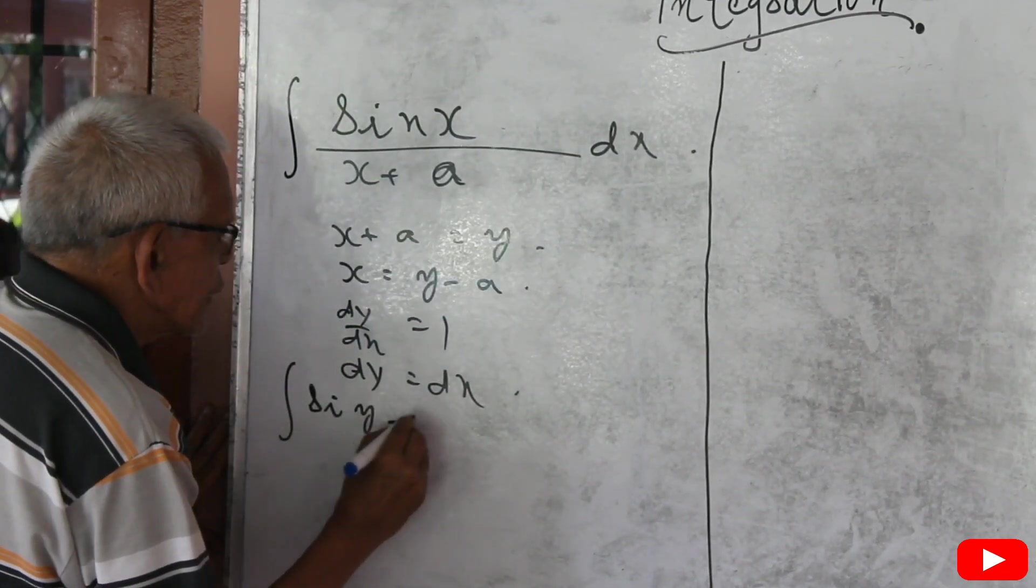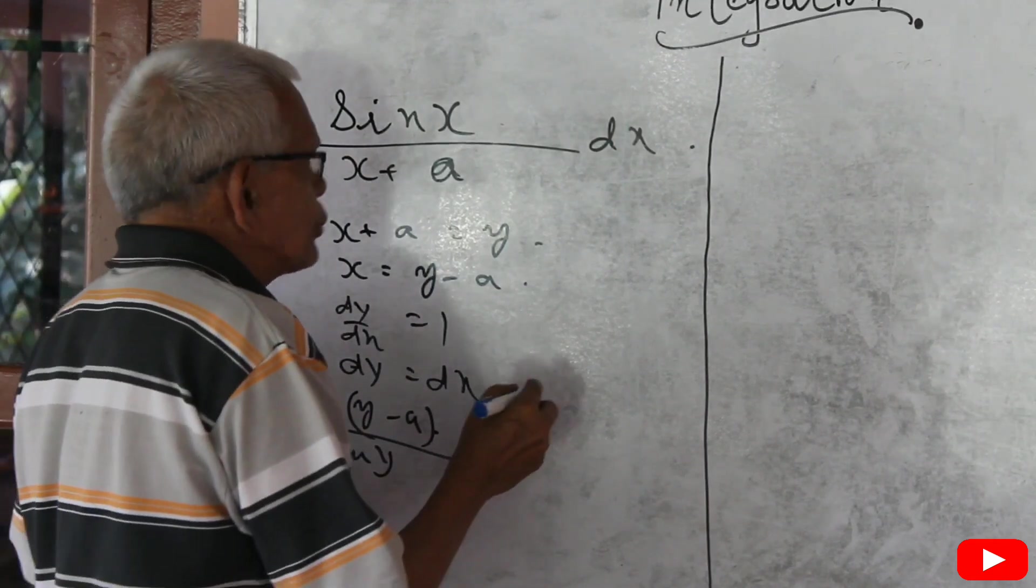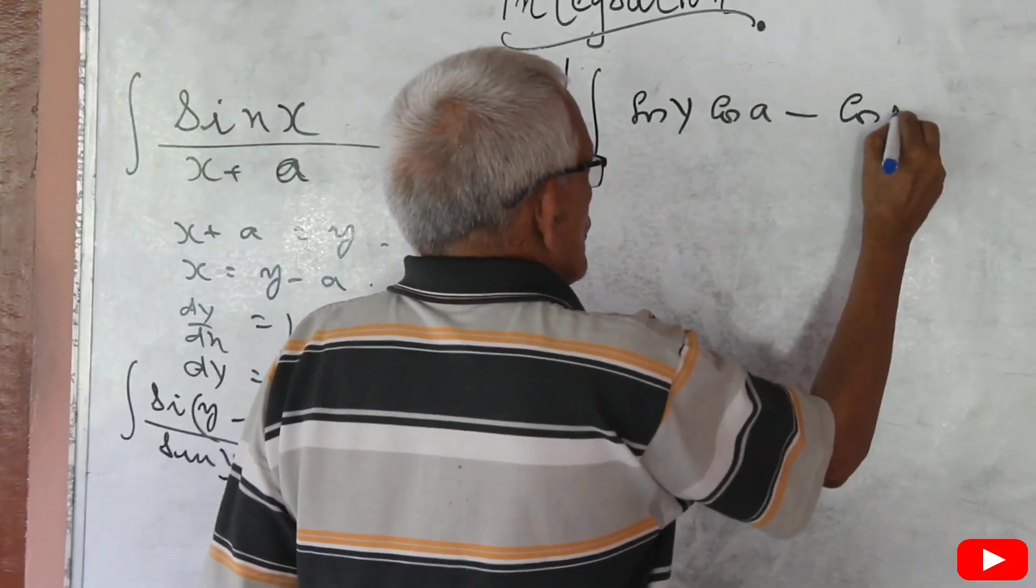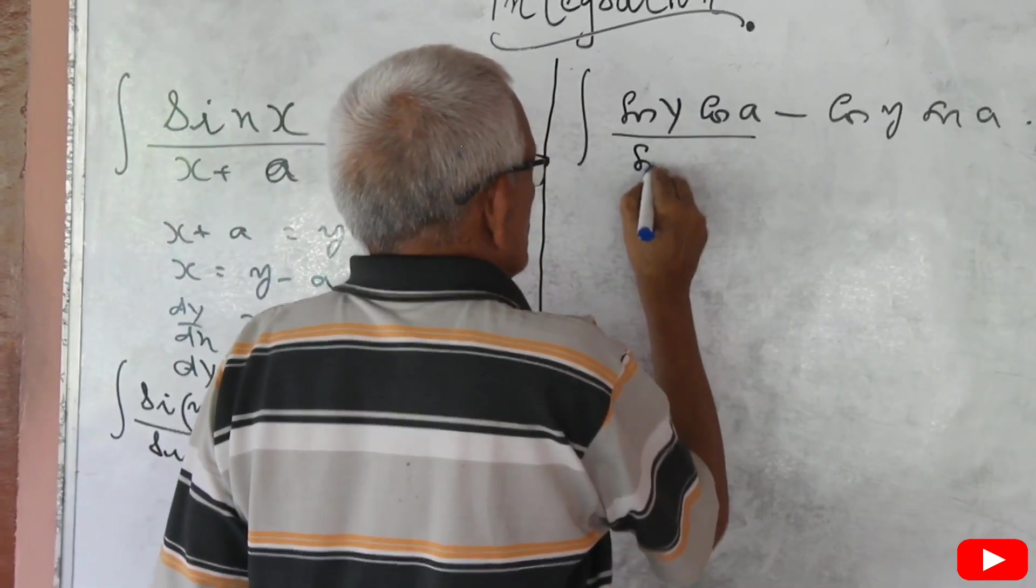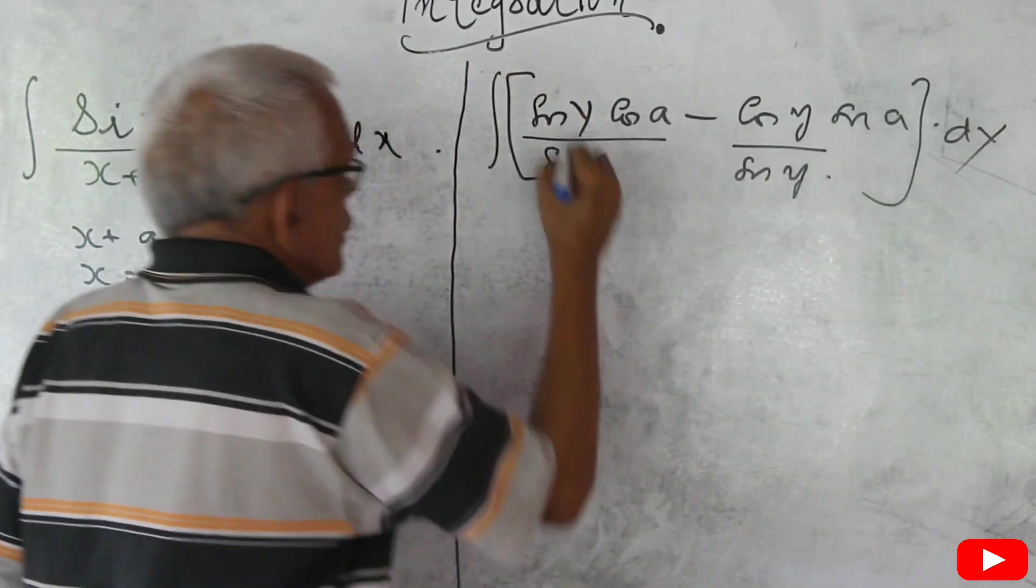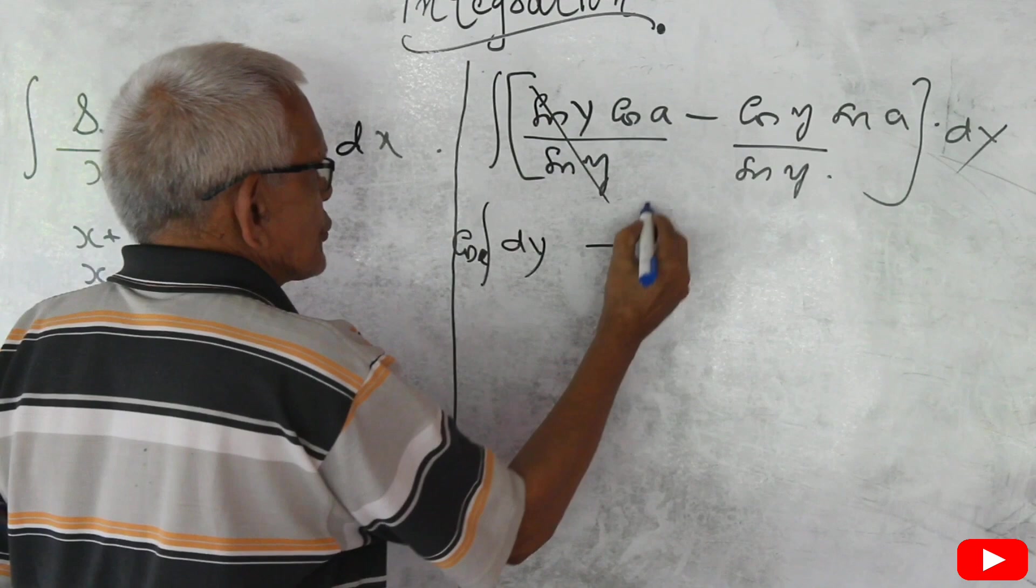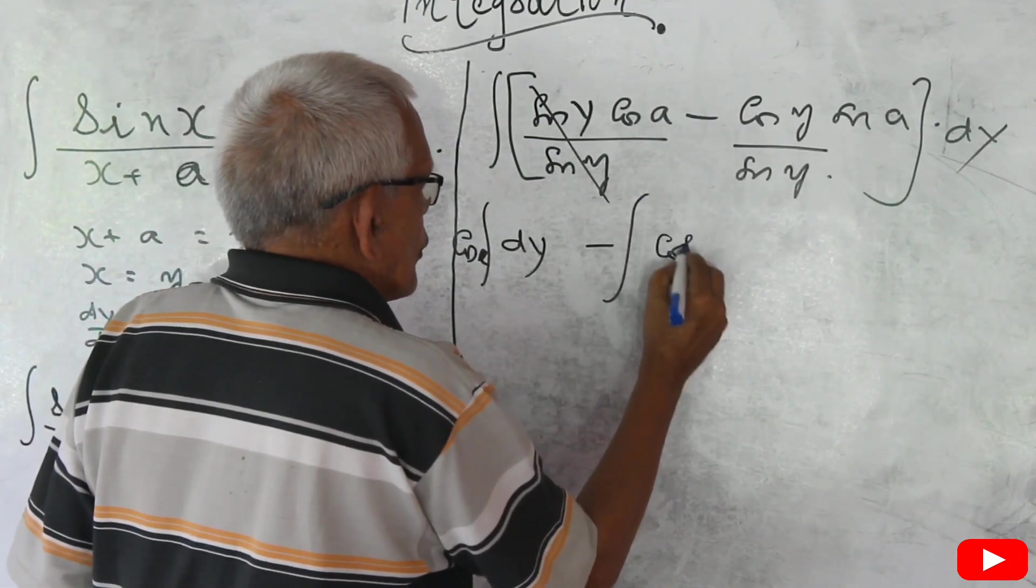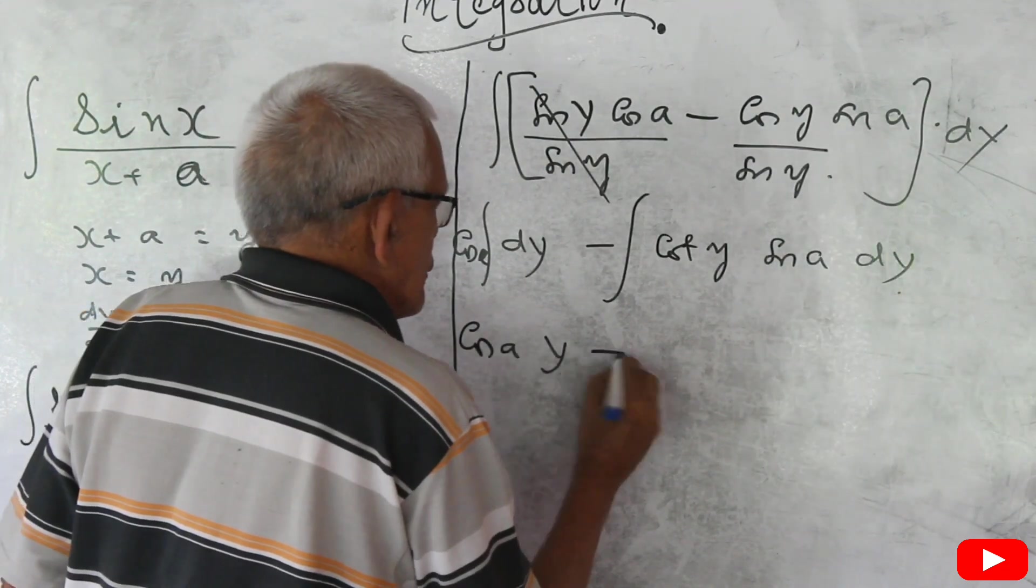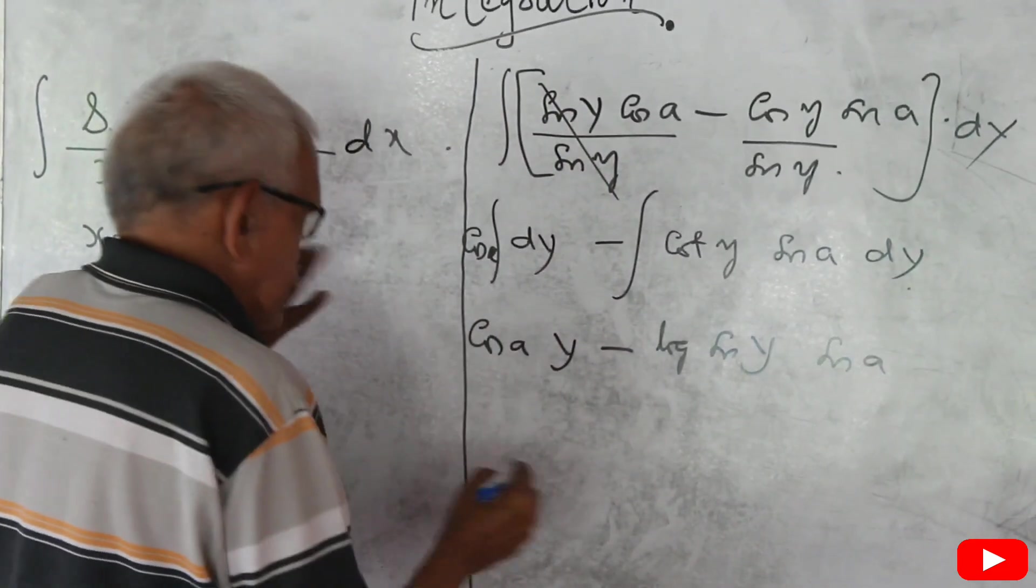Sin y minus a by sin y. Expanding using sin formula, sin y cos a minus cos y sin a, sin y, dy. Cancelling sin y, cos a dy minus cot y sin a dy. Cos a y minus log sin y sin a, plus c.